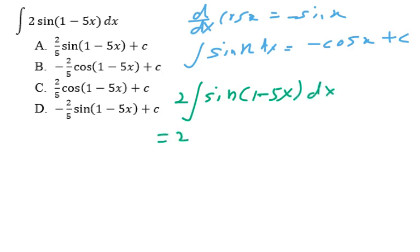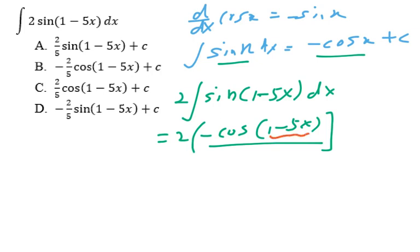Keeping the two outside, integration of sine will give you negative cosine. Hence, negative cosine(1 - 5x) divided by the derivative of (1 - 5x), which is equivalent to negative 5.